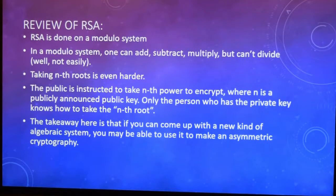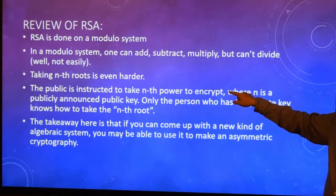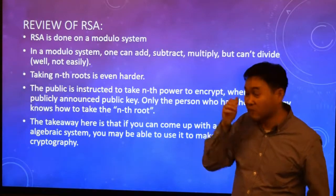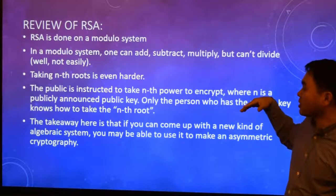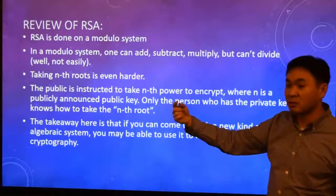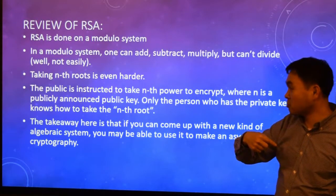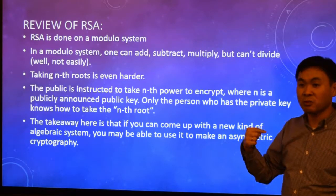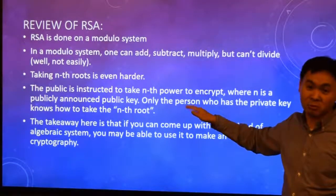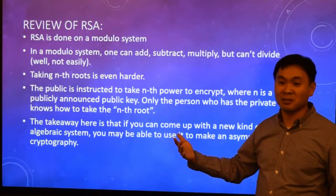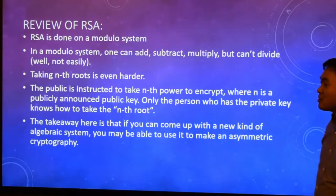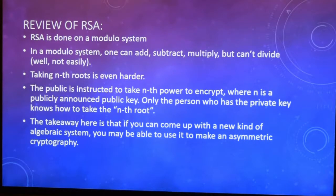RSA encryption works because the public is instructed to take the e-th power — e is the public key — to encrypt. The encrypted message is sent to the person with the private key, and only that person can unlock it by doing the nth root. The nth root is actually done by more exponentiation rather than literally taking the root. The takeaway is: if you can come up with a new kind of algebraic system, you may be able to use it to make asymmetric cryptography.